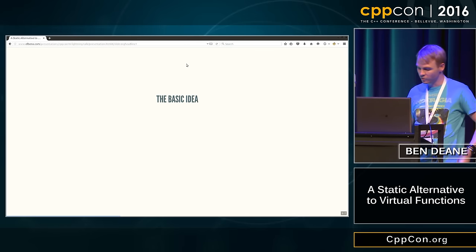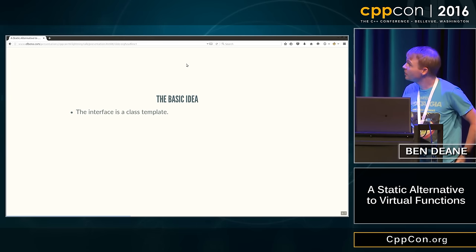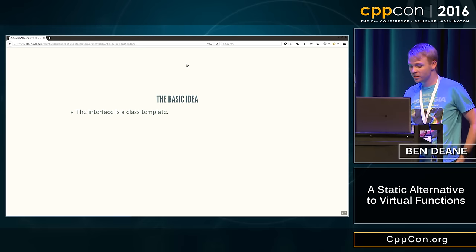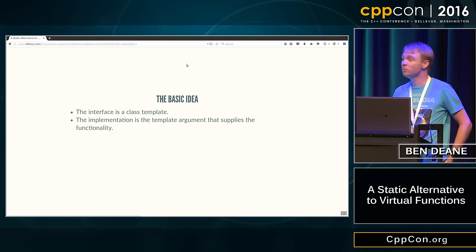Now this is normal in kind of object-oriented code. So I had this idea of doing it with all static. So the idea is basically that we're going to have the interface be a class template, and the implementation will be its template argument that supplies the functionality.